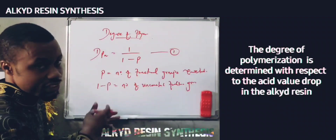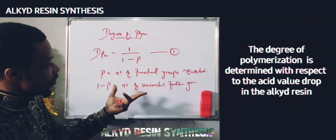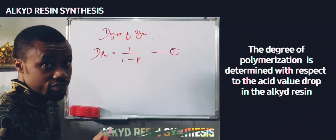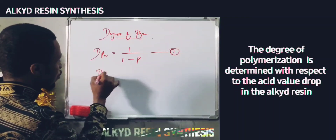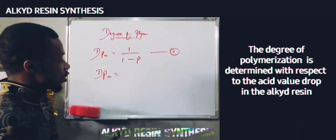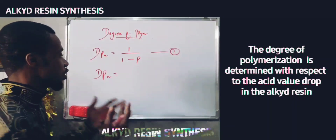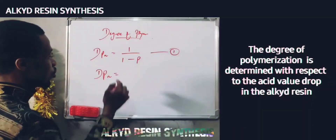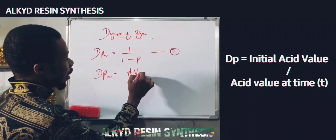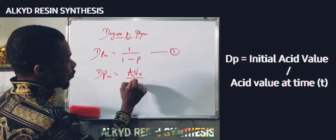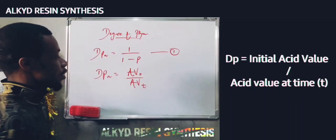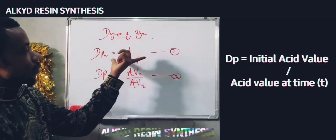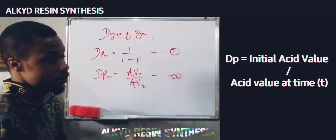Before applying this, if you've not watched my previous video, you might have a little difficulty understanding this. For the synthesis of an alkyd resin, we'll be employing this formula: the degree of polymerization is totally dependent on the dropping acid value, and it is expressed as acid value at time 0 divided by acid value at time T. We're also going to compare whether these formulas are equivalent.